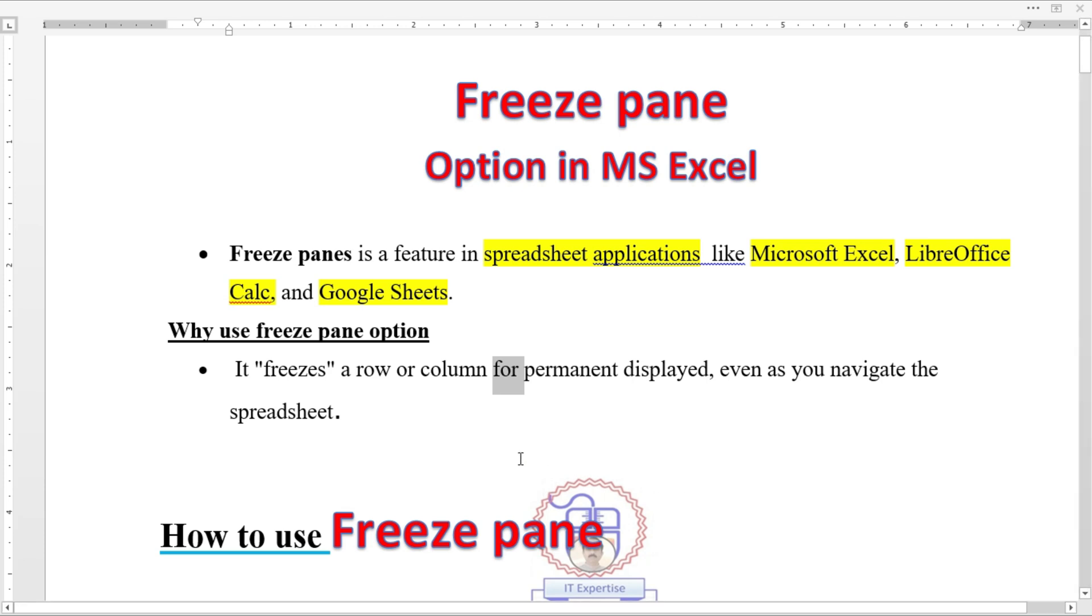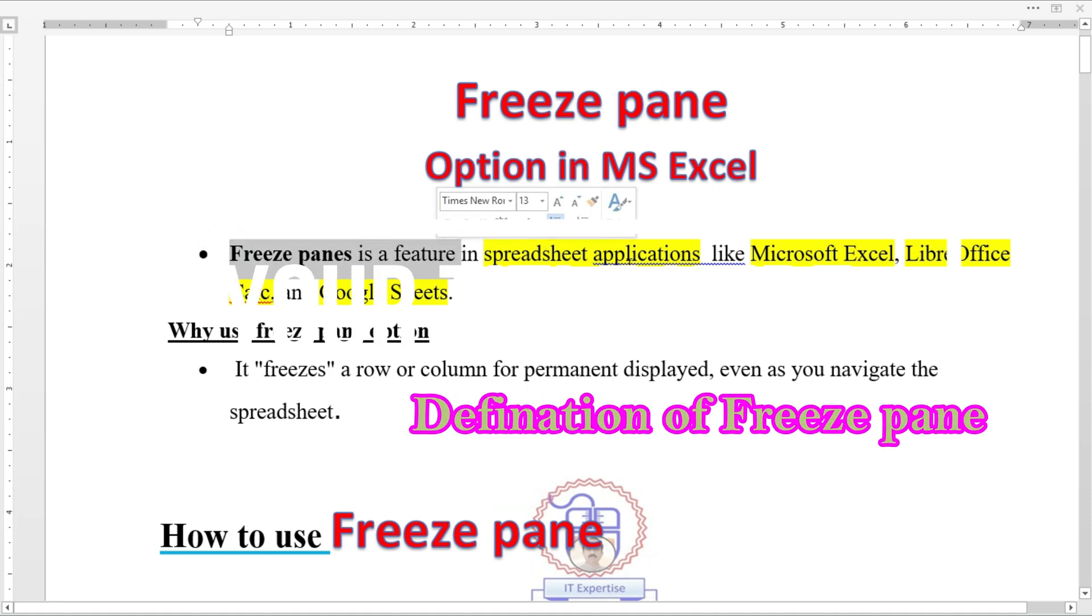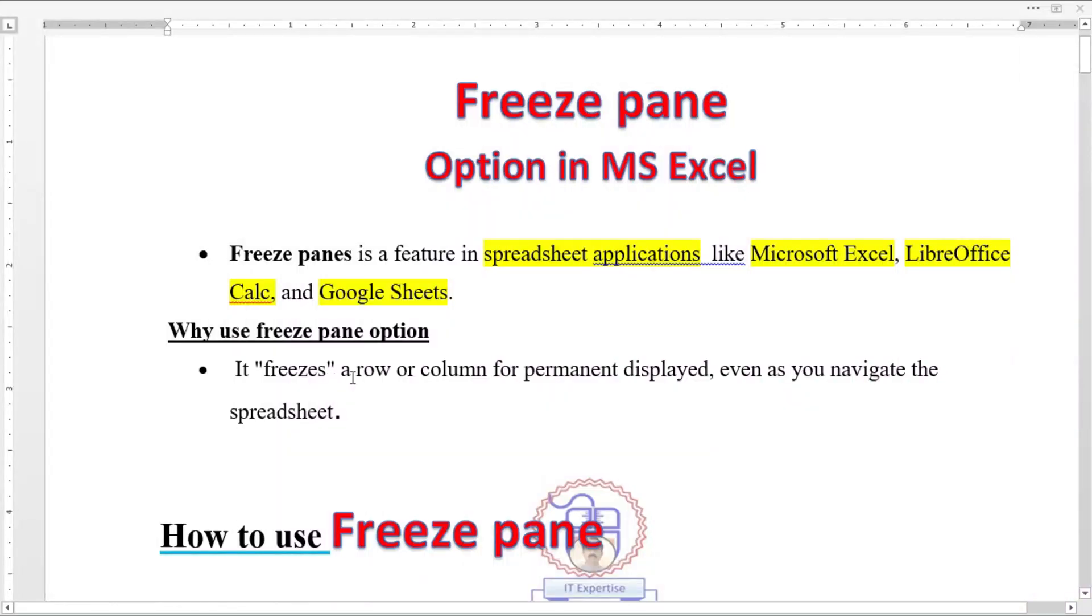Let's discuss what is freeze pane. Freeze pane is a feature normally in spreadsheet applications like Microsoft Excel that freezes rows or columns for permanent display even as you navigate the spreadsheet.